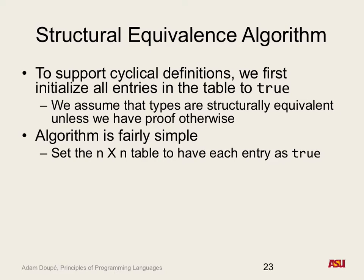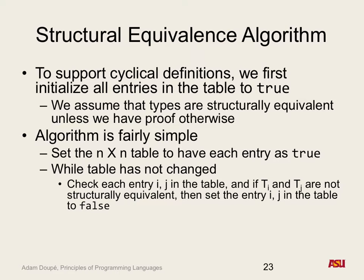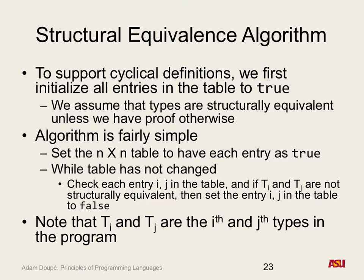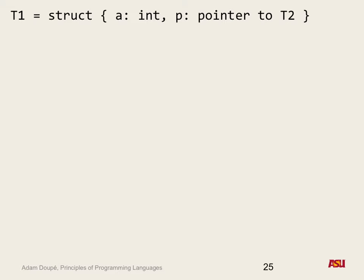The algorithm is simple: an N-by-N table, each entry defaulted to true. Then a while loop — while the table has changed, check each entry i,j. If type i and type j are not structurally equivalent by the rules we set out, set entry i,j to false. That's it. We'll walk through a simple example, and your homework involves doing more of this — determining structural equivalence and other types of type equivalence.